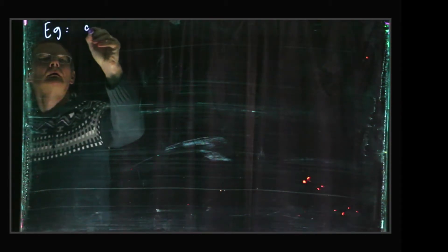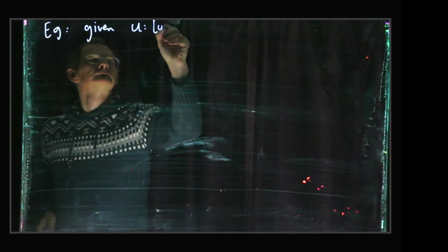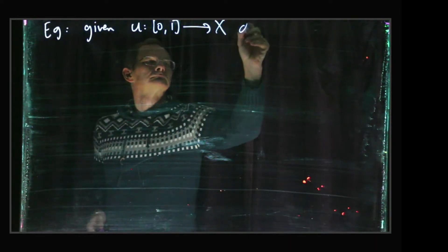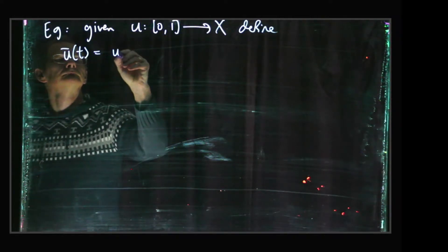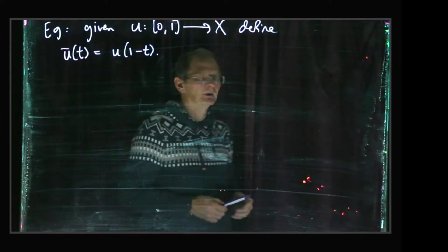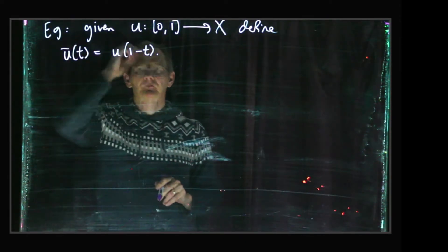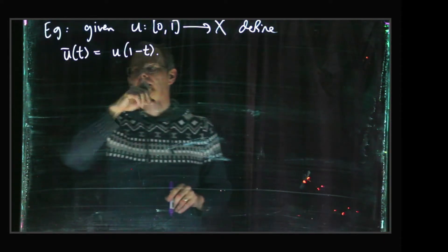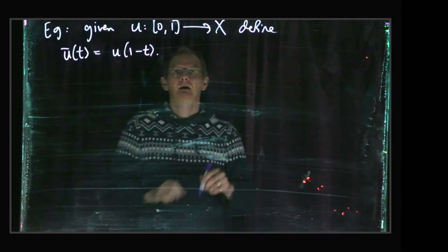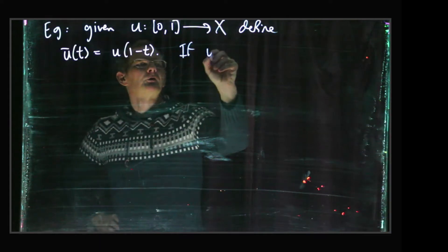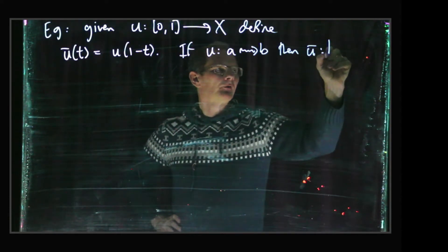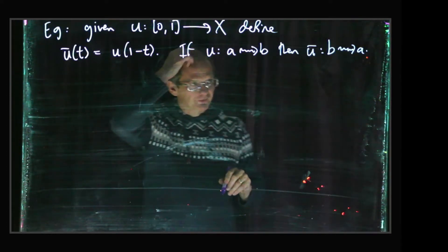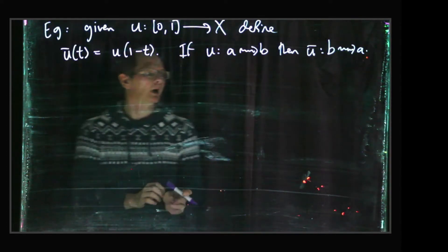Okay, so the next thing is just path reversal. So we just define ū(t) to be u(1 minus t), so if t goes from 0 to 1, then 1 minus t goes from 1 back down to 0. So if u is a path from a to b, then obviously ū is a path from b to a, because ū(0) is u(1), which is b, and ū(1) is u(0), which is a.